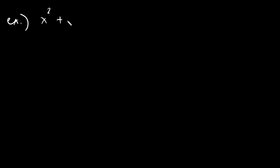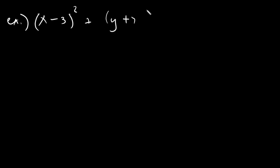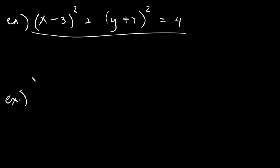So it would be the other way around. You will be given an equation, say x minus 3 squared plus y plus 7 squared is equal to 4, and you will find the center and the radius. We will have two examples: one written like this, and one written like this.